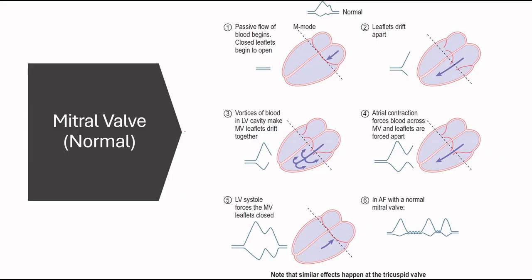Next we'll talk about the normal mitral valve through the M-mode. So this is what the normal looks like. One, we have diastole, so we have passive flow of blood, and it's still closed, but then the leaflets drift apart, so you can see that these are more apart, as the blood flows through passively, and then afterwards the blood in the LV cavity flows back a little bit, so it makes the leaflet drift back together.